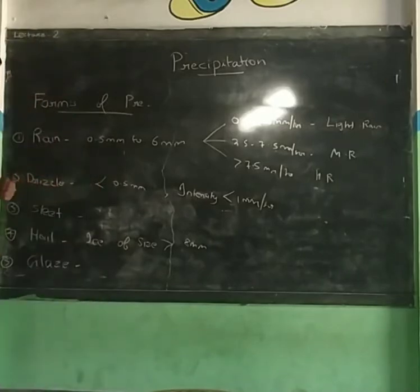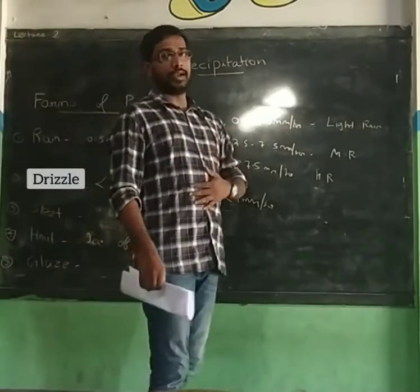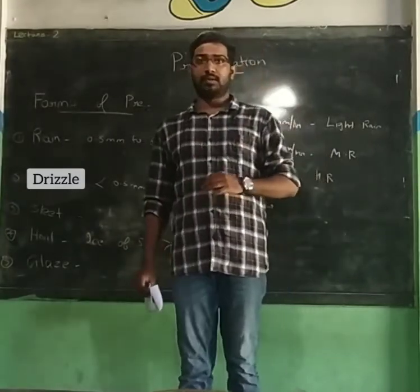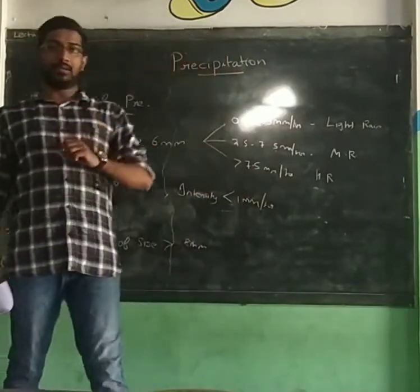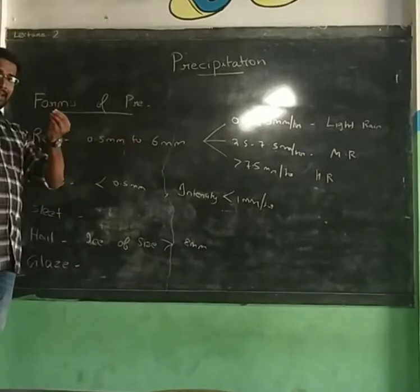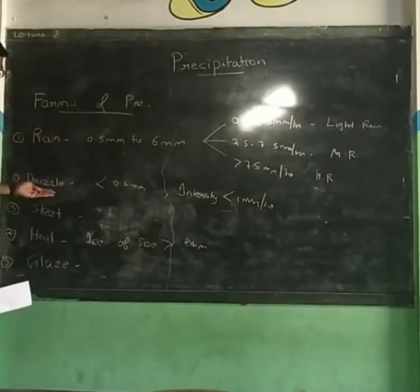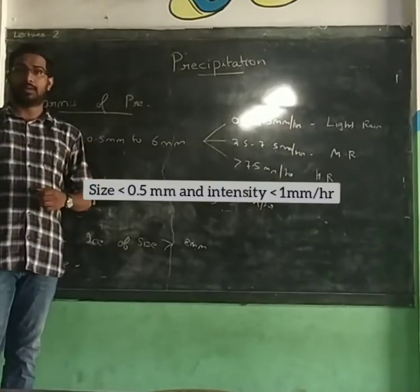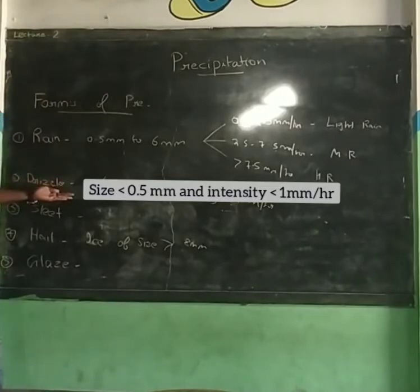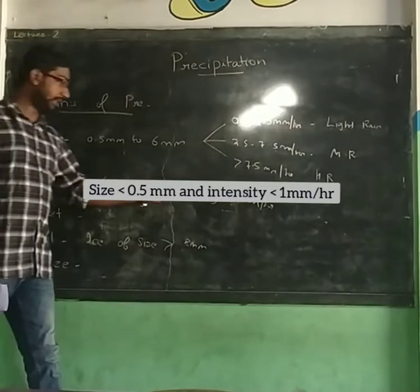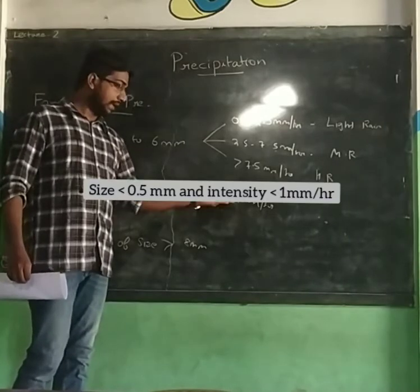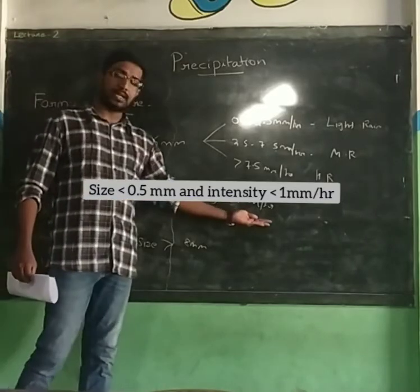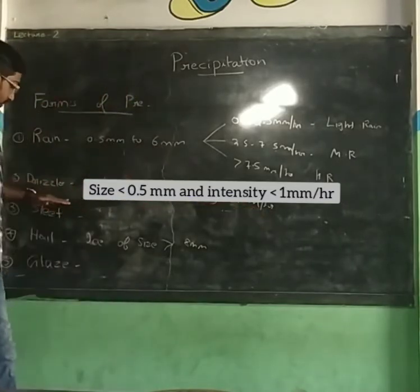And then there is drizzle, which is a little bit different. Drizzle is a lighter form of precipitation. The rain drop size is less than 0.5mm, and the intensity is less than 1mm per hour. When the size is less than 0.5mm and the intensity is less than 1mm per hour, the precipitation is classified as drizzle.